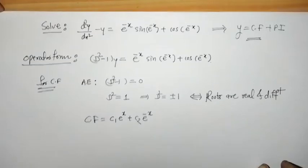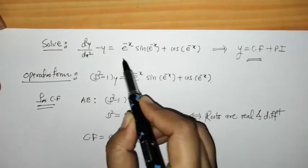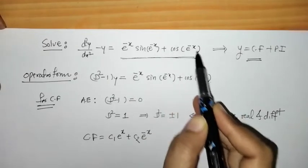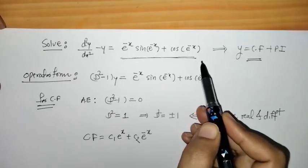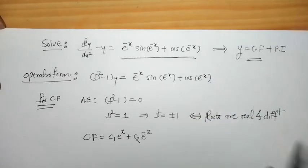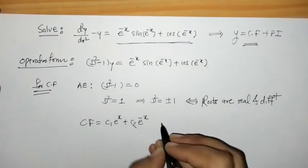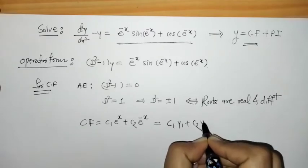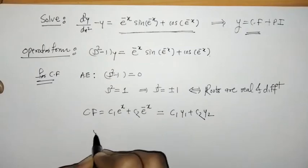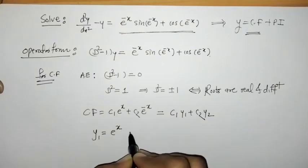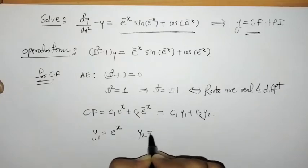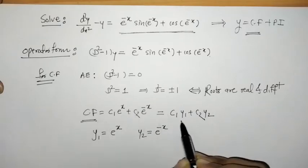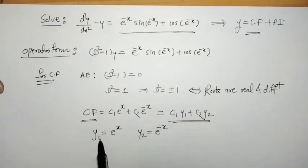Now we have to find PI. We can check that the given function is not of any of the 6 standard cases, so we have to find PI using the method of variation of parameters. For this, first we write down CF in the form c1*y1 + c2*y2, where y1 = e^x and y2 = e^(-x). From this we identify y1 and y2.